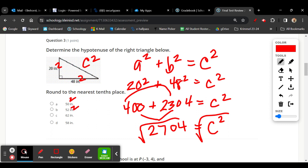with the multiple choice, you can square one of these to see if it equals 2704. So 50 squared, 52 squared, 62 squared, or 58 squared. You're going to probably eliminate that one. It's not going to give you an answer. So square these and see which one equals 2704 for your answer.